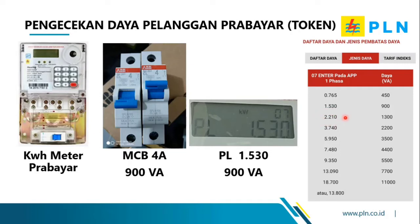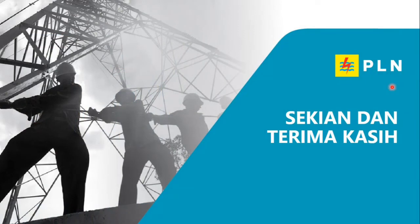Ada beberapa KWH meter yang menampilkan tiga angka di belakang koma, misalnya 1.530, namun ada juga yang hanya dua angka di belakang koma, yaitu 1.53. PL di sini adalah power limit — artinya pembatas daya. Teman-teman atau elektrisan bisa mencoba pada meter prabayar dengan menekan 07 enter, kemudian bandingkan angka yang muncul di layar dengan tabel yang ada di aplikasi panduan APP prabayar.